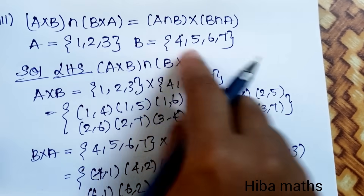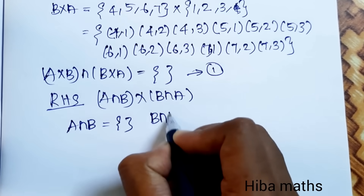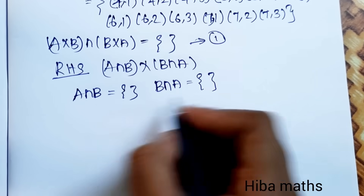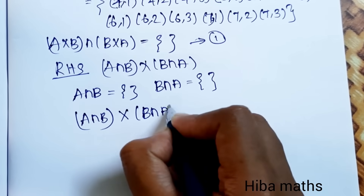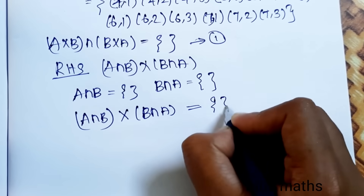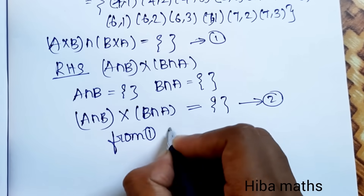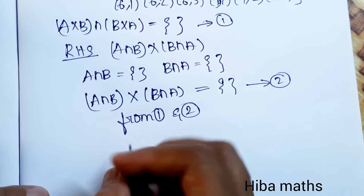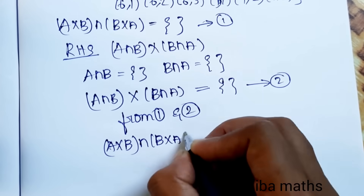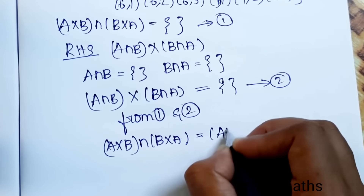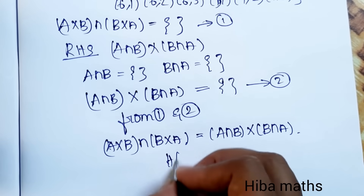Next find B×A. B = {4,5,6,7} cross A = {1,2,3} gives: (4,1),(4,2),(4,3),(5,1),(5,2),(5,3),(6,1),(6,2),(6,3),(7,1),(7,2),(7,3). The intersection of A×B and B×A has no common elements, so (A×B)∩(B×A) = null set = (A∩B)×(B∩A). Hence proved.